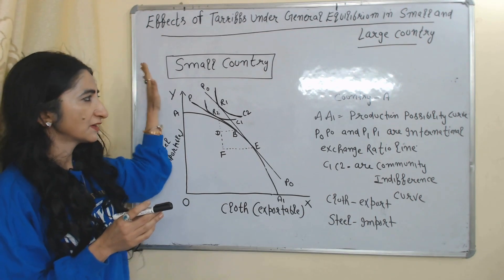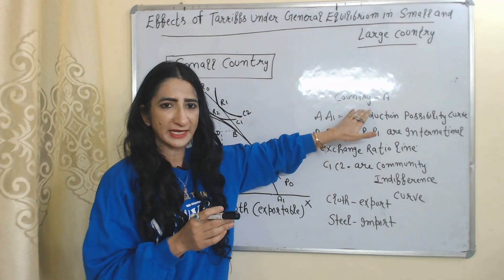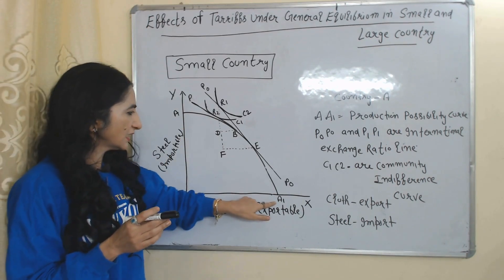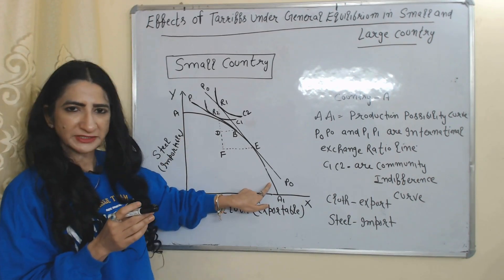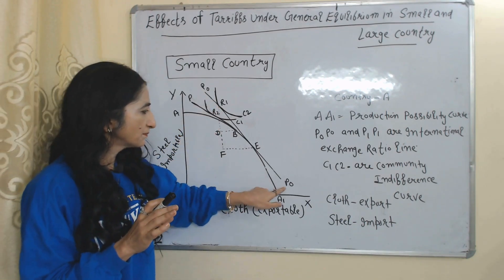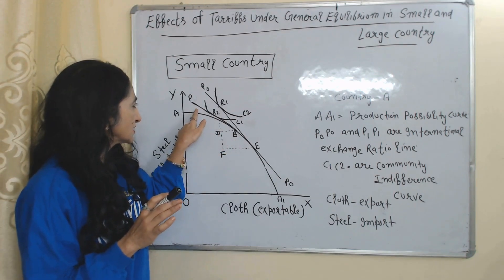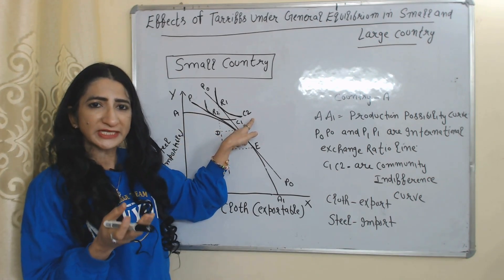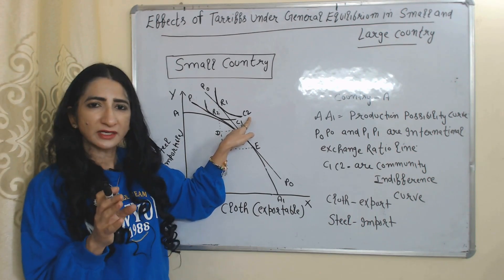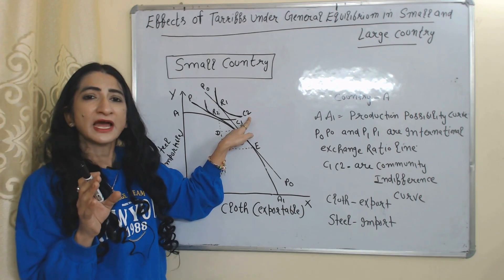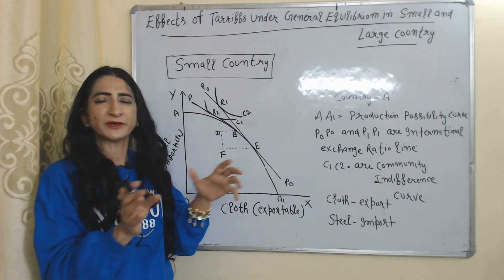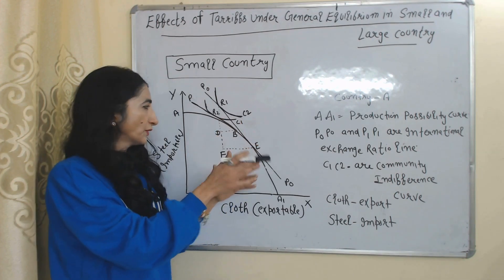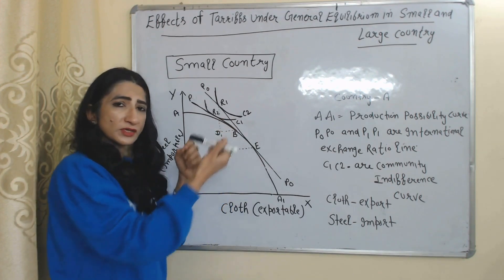First of all we are going to talk about a small country. Country A is doing export of cloth and import of steel. AA1 is the production possibility curve of country A. P0P0 is the international exchange ratio line. C1 and C2 are community indifference curves, which tell us the welfare of the country. A higher community indifference curve means welfare is improving, and a lower one means loss in welfare.